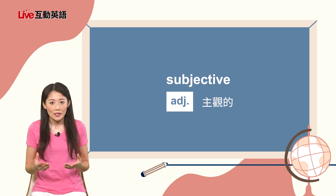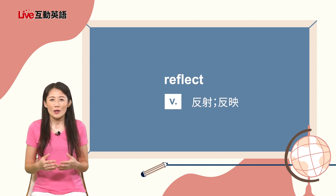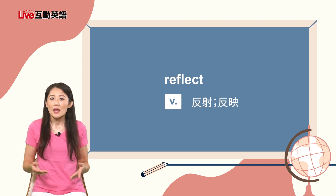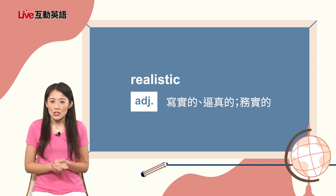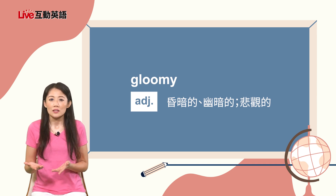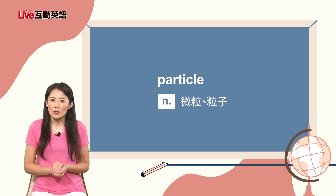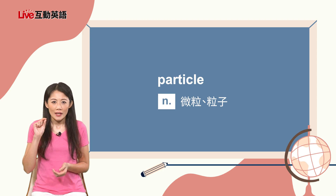老师提到subjective，就是在subject后面加上-ive构成这个形容词，意思是主观的。课文单字：reflect是动词，表示反射或反映；realistic表示写实的、逼真的，或指务实的；补充单字gloomy，形容昏暗的、幽暗的，也可以形容悲观的；还有particle，指微粒、粒子的意思。